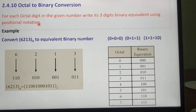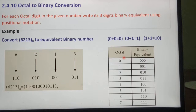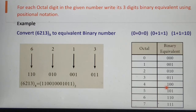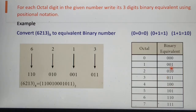Here our main important point is we have to write each octal digit into its 3-digit binary equivalent as shown in this table. The table contains all 8 octal digits from 0 to 7 and their binary equivalents. The binary equivalent for 0 is 000, then binary equivalent for 1 is 001, and so on. We have to write each octal digit into its 3-digit binary equivalent.